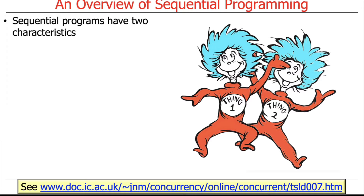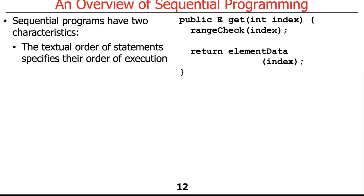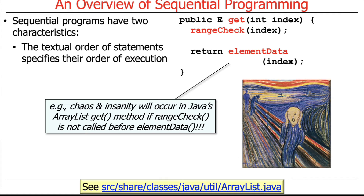There are two primary characteristics of sequential programs. First, the textual order of statements specifies their order of execution. Here's an example from the get method in the ArrayList class in Java: the range check method must occur before the element data method is called. If element data runs before range check for some reason, chaos and insanity will ensue, because we must execute that statement before the other one.